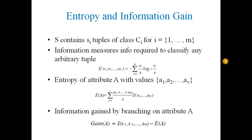Hello friends, today we will see about information gain, which is one method to select the attributes — or we can say it's the method of attribute selection. Here you can see the main equation of information gain. The gain for a particular attribute A is equal to the information measure minus the entropy value for that attribute.